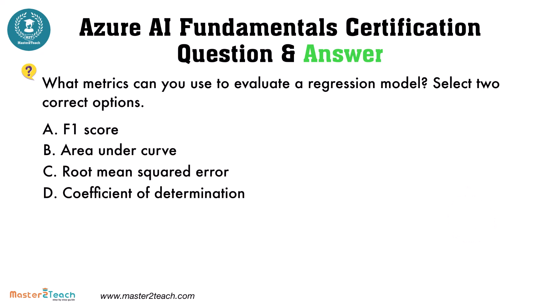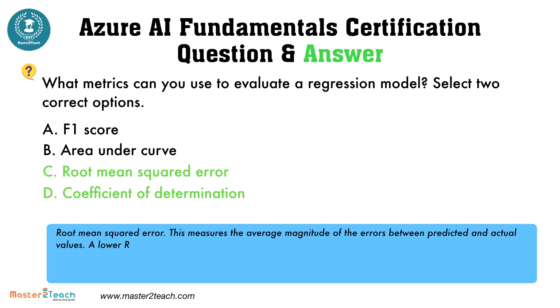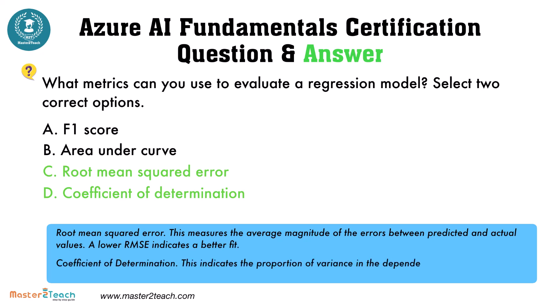The correct answers are root mean squared error and coefficient of determination. Root mean squared error measures the average magnitude of the errors between predicted and actual values — a lower RMSE indicates a better fit. Coefficient of determination indicates the proportion of variance in the dependent variable that is predictable from the independent variables; a higher R² value indicates a better fit.